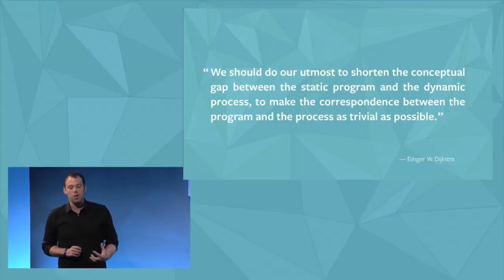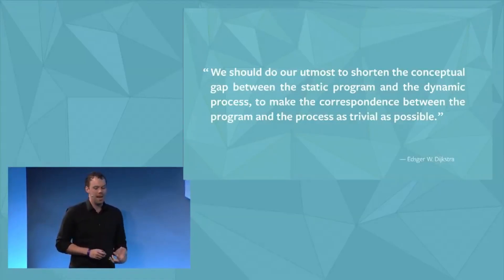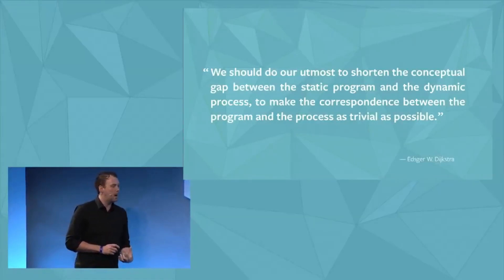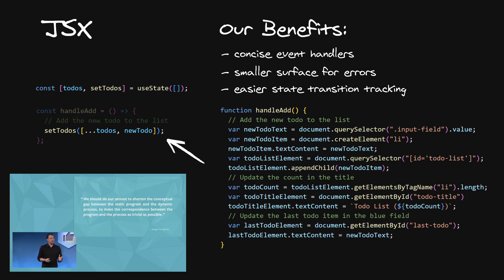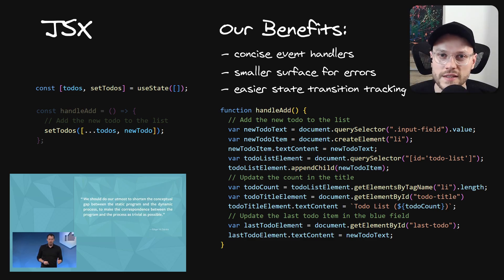To make the correspondence between the program and the process as trivial as possible — what Dijkstra is saying is we need to take this series of imperative mutations, these things that are changing over time, and try to make it look like a program that executes at a single point in time. State changing over time looks simpler in React, just as Dijkstra wanted. It shortens the gap between static programs and dynamic processes.